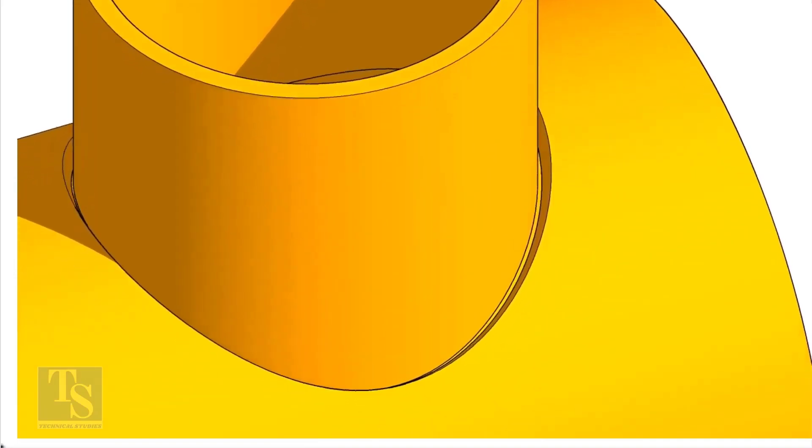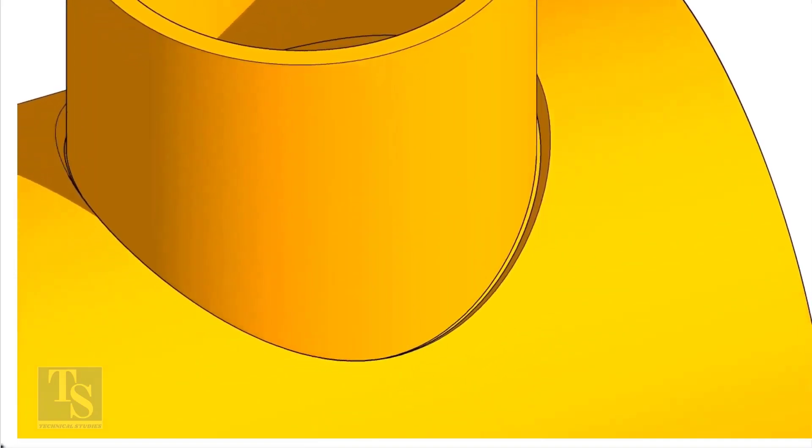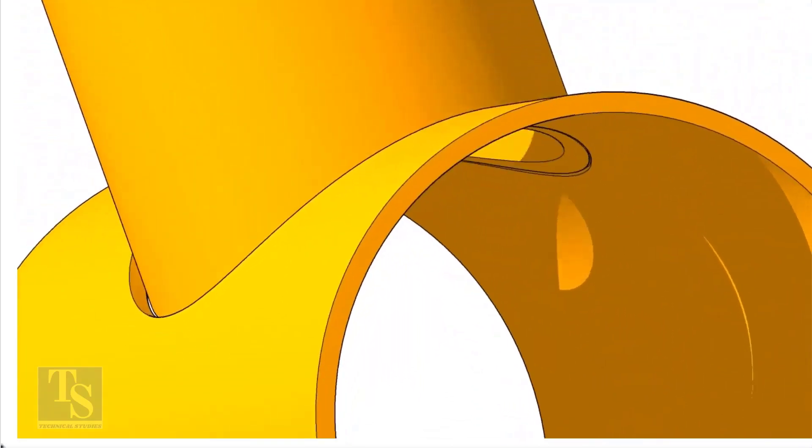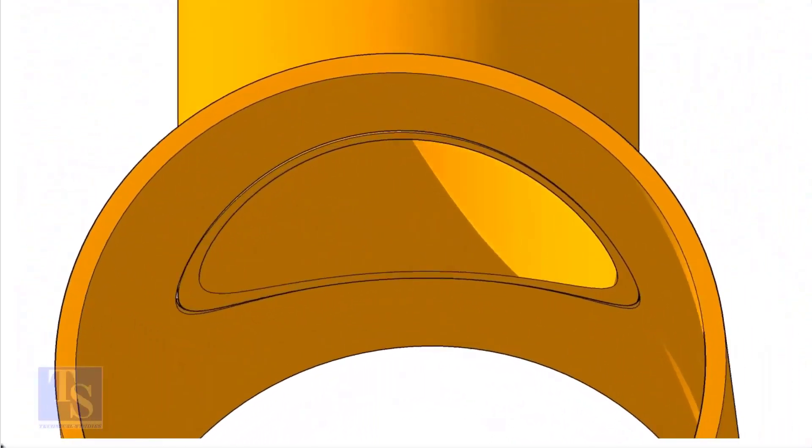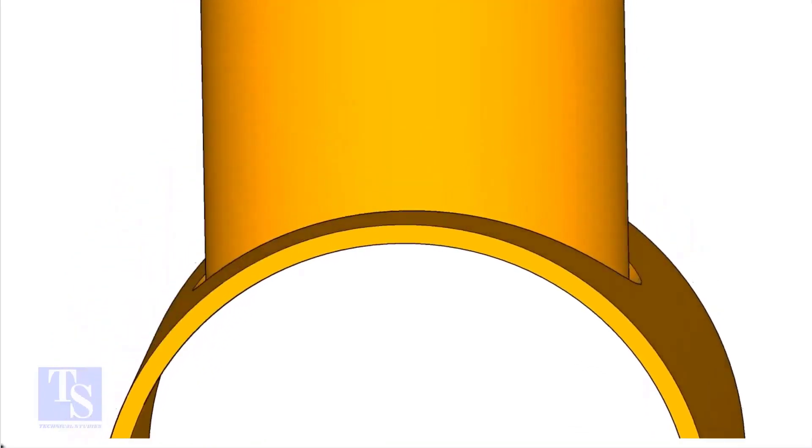On the branch pipe, there is no bevel preparation, but the cut-back cut is done. The end of the branch is level with the inside diameter of the header pipe.